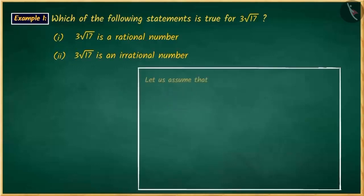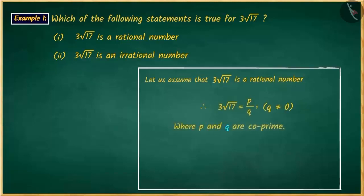Let us first assume that 3√17 is a rational number. We will write it as p/q, where p and q are co-prime numbers, and p and q have no common factors other than 1.